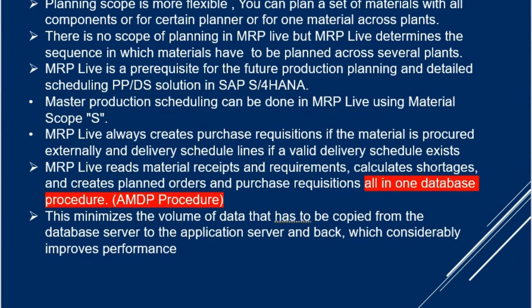One of the first biggest factors in MRP Live is that the planning scope is more flexible. You can plan a set of materials with all components — you can give one material or multiple materials, run it at a plant level, or run it at a planner level, or for one material across all plants. In Classic MRP, there was a scope of planning you had to define, but that has been completely removed because MRP Live has the capability to run across all plants and give output quickly — better efficiency is one of the prime factors.